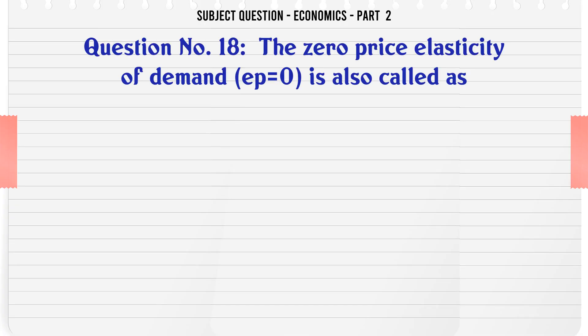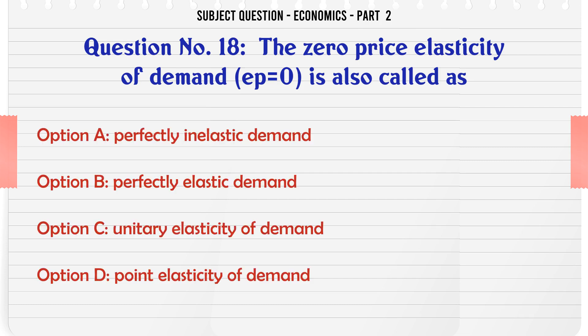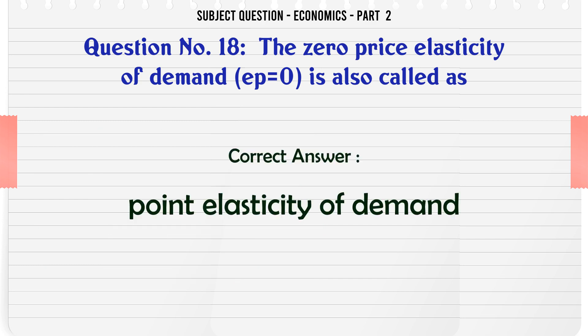The zero price elasticity of demand, where E is equal to zero, is also called as: A. Perfectly inelastic demand. B. Perfectly elastic demand. C. Unitary elasticity of demand. D. Point elasticity of demand. The correct answer is: Point elasticity of demand.